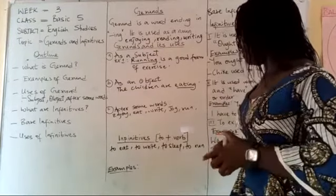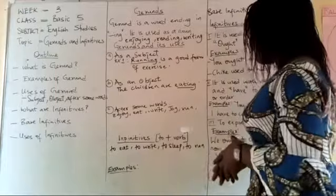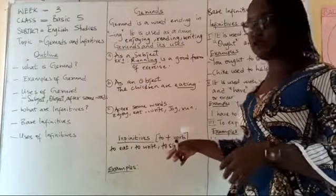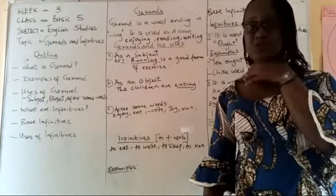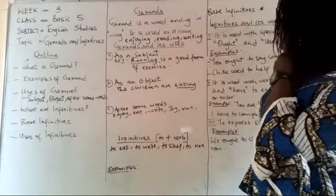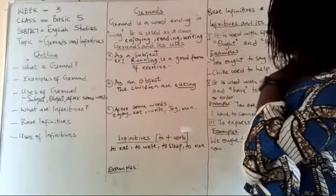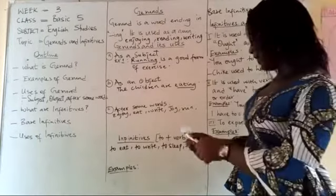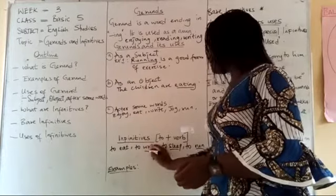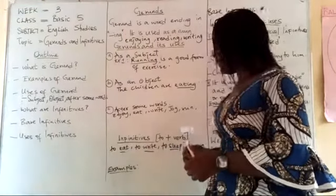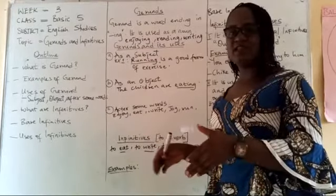You observe that they are telling you what is being done, and you identify them with the presence of 'to'. Now, when we talk about bare infinitives, the bare infinitives are words like: sleep, run, write, eat. These are your bare infinitives. When you put the word 'to' before them, you no longer have bare infinitives.